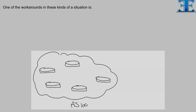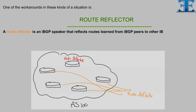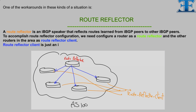A route reflector is an IBGP speaker that reflects routes learned from IBGP peers to other IBGP peers. To accomplish this, you will configure a router as a route reflector in the AS and other routers in the area as route reflector clients. A route reflector client is just an IBGP speaker, and notice that there is no special configuration for them.